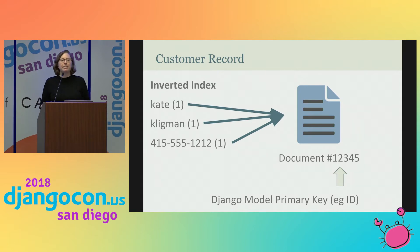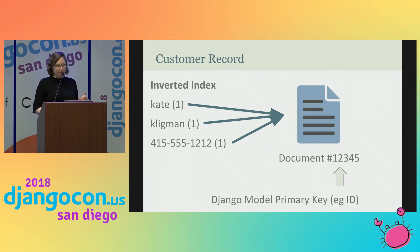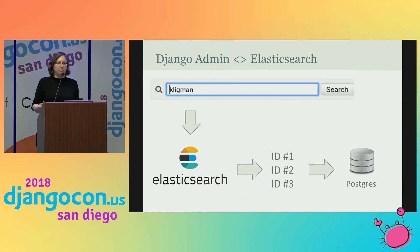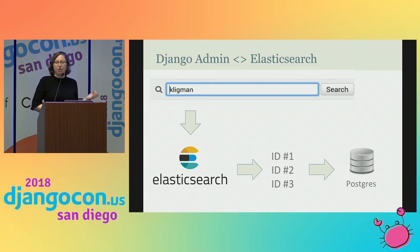This is perfect for hooking into the Django ORM. If I have a customer record split out — in this case my name, Kate Kligman, and a phone number — I can correlate that to an Elasticsearch document ID and set that ID to be the primary key on my Django model. So customer 12345 could be my customer ID. This makes it very easy to hook into the ORM. The workflow is: perform a search in the admin, the search gets shipped off to Elastic, Elasticsearch returns a list of IDs corresponding to the ORM's SQL database IDs, and then I go back to Postgres and look them up and rehydrate them.